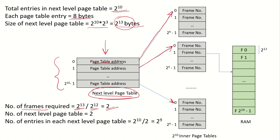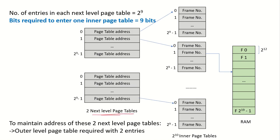So this next-level page table is stored in 2 frames, meaning there are 2 next-level page tables. How many entries are in each? Total entries 2^10 divided by 2 = 2^9 entries per frame — consistent with our earlier finding that one frame holds 2^9 entries. So the next-level page table is broken into 2 parts, each in its own frame with 2^9 entries.